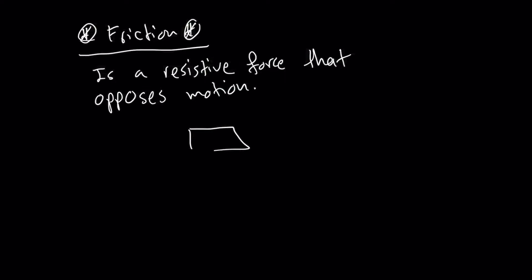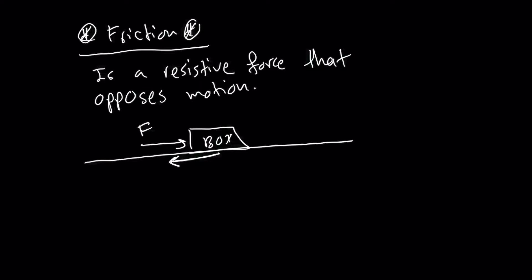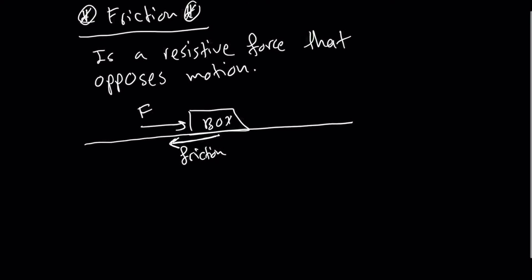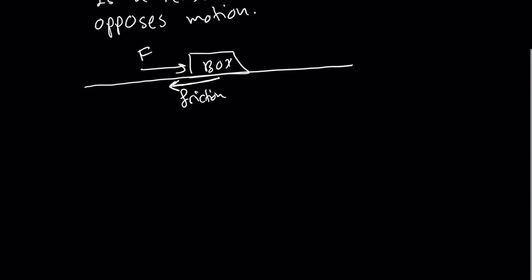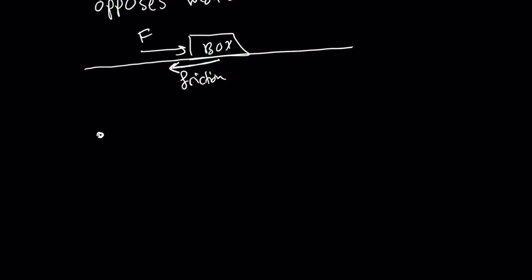If you have a box — the famous box — and you apply a force F, this box will be experiencing a frictional force between the surface of the box and the actual surface that it is in contact with. This leads us to the point: what are the two things which affect my frictional force? Number one: the nature of the surface.